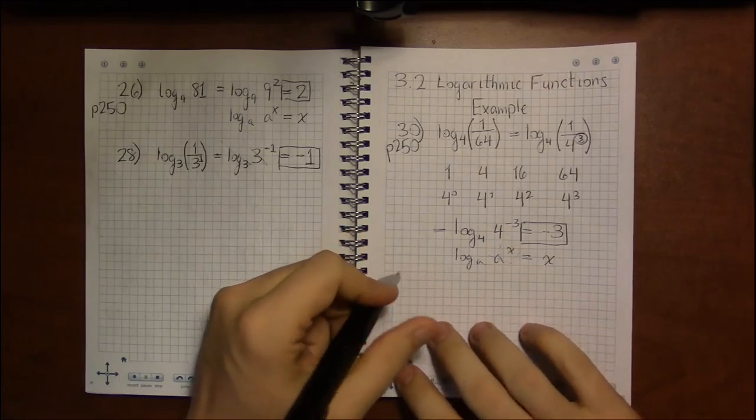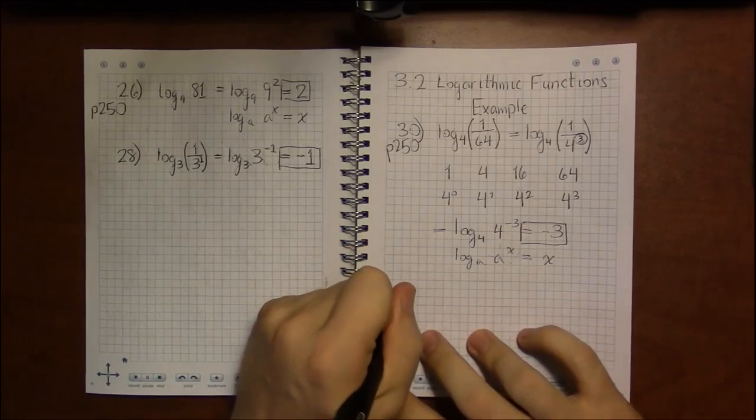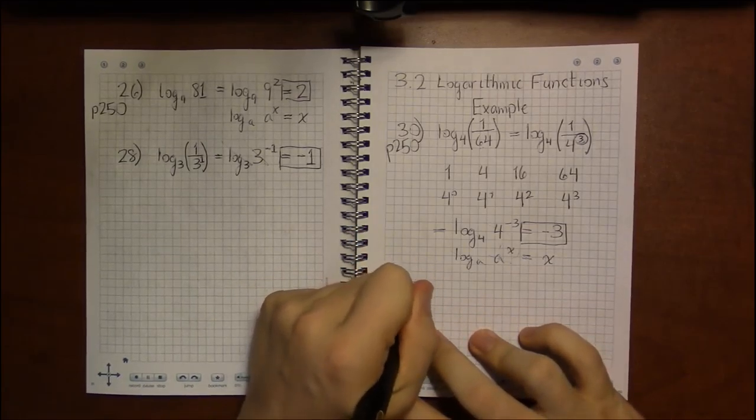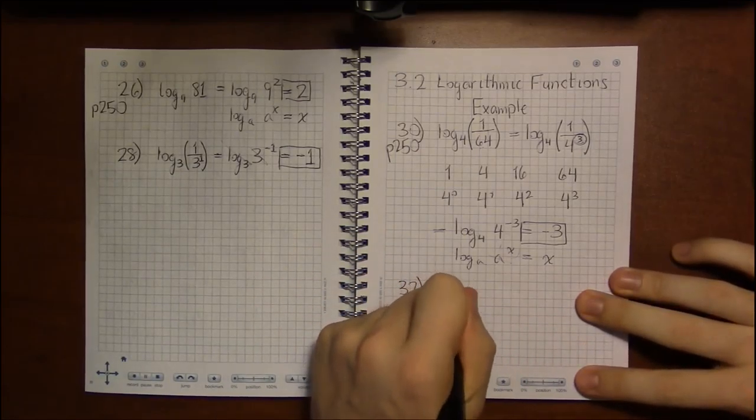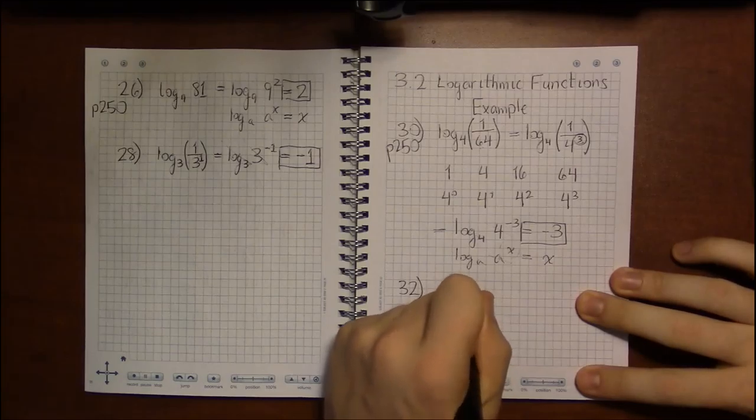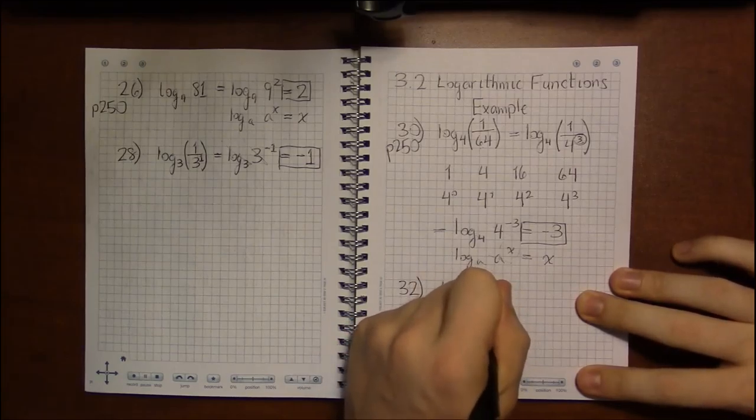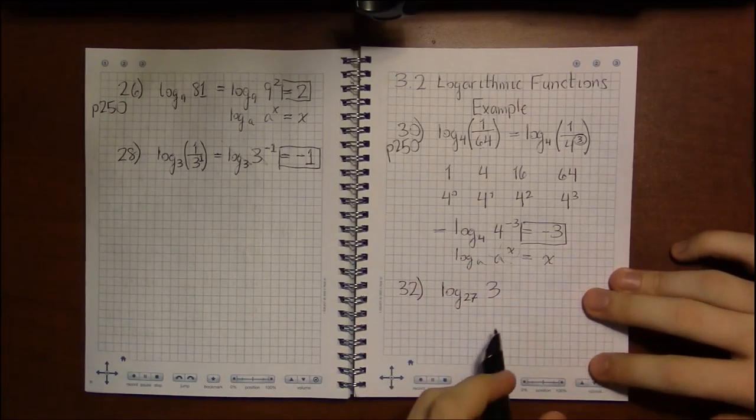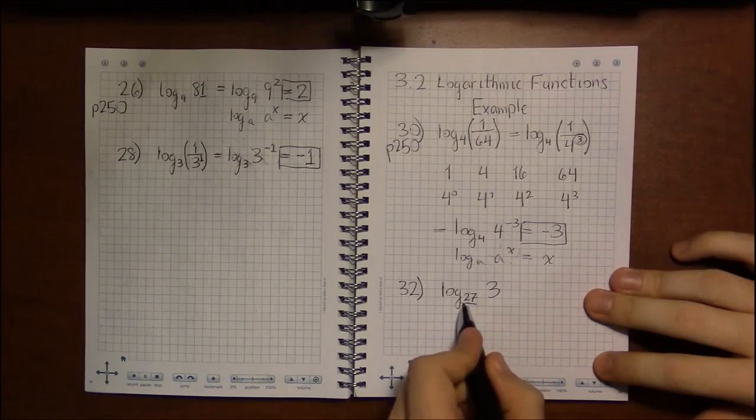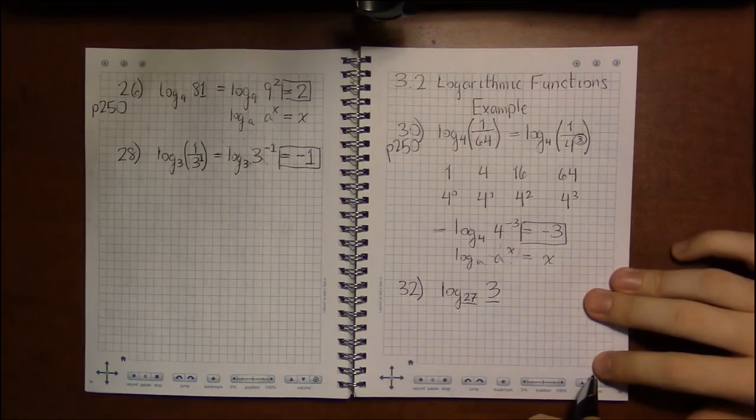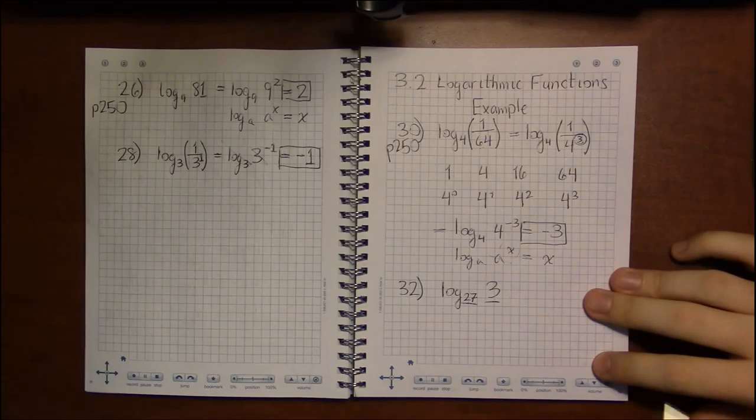Let's take a look at 32. Log base 27 of 3. Oh, this is not nice. The base is larger than the one I'm taking the log of.